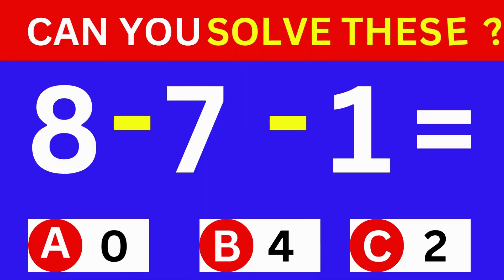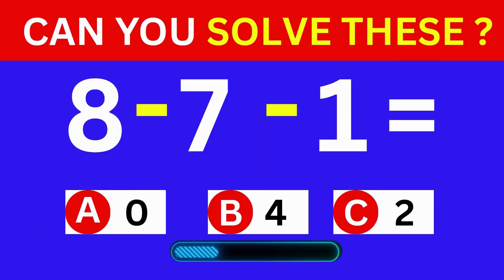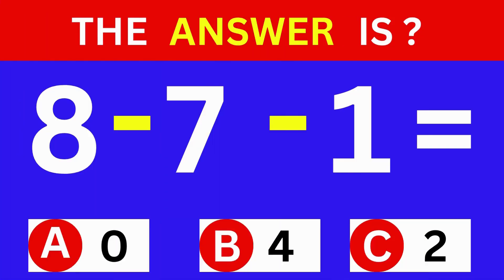8 minus 7 minus 1 equals? A: 0. B: 4. C: 2. The answer is option A: 0.